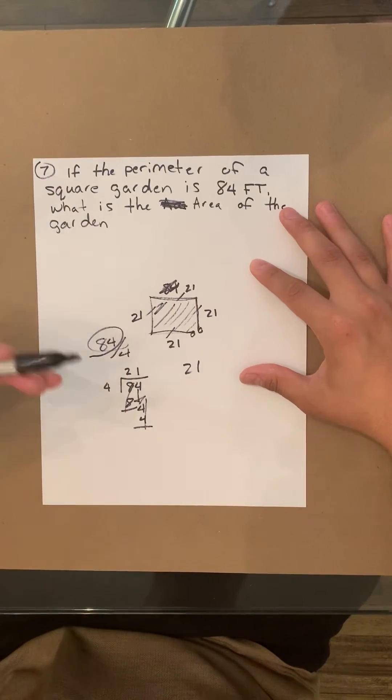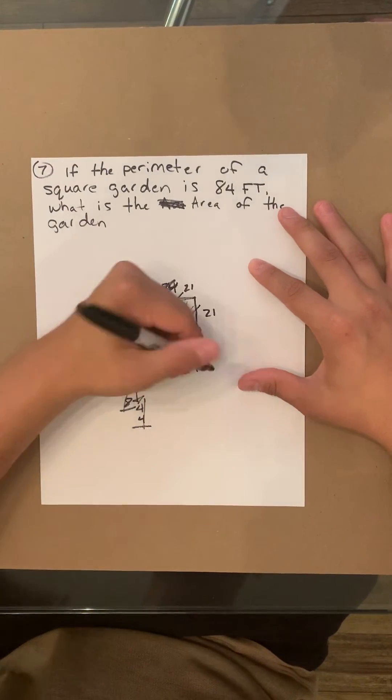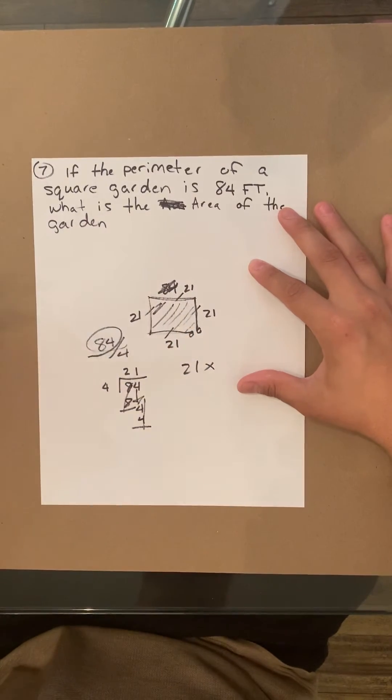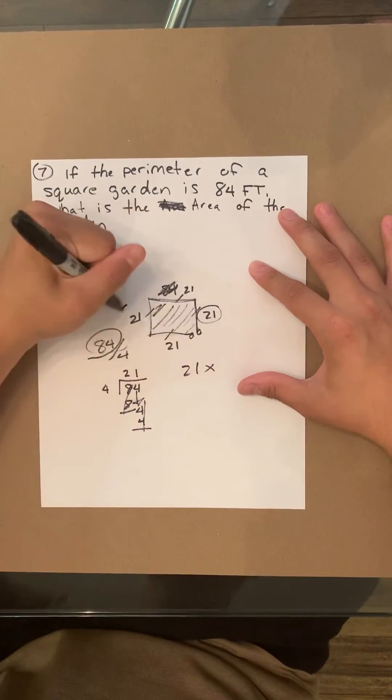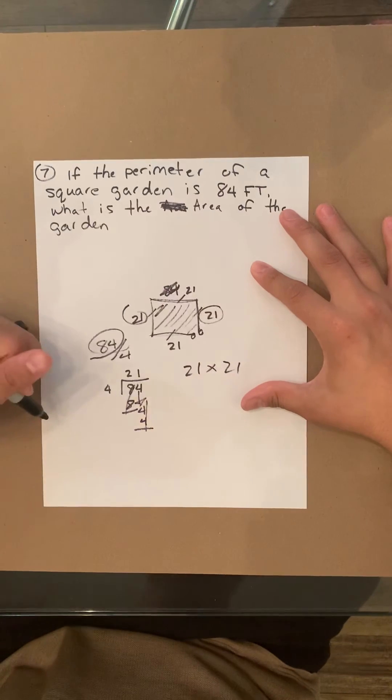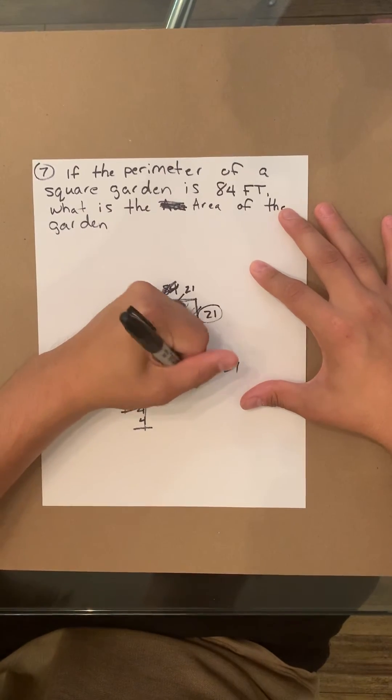So what we are going to do beyond that, it's going to be 21 times the other equal side, 21. So it'll be 21 times 21. And I will show you the math of that.